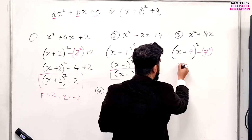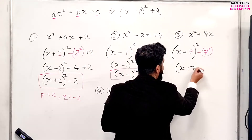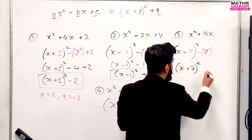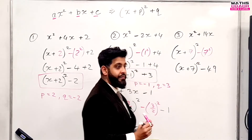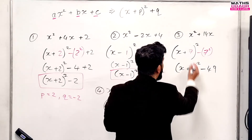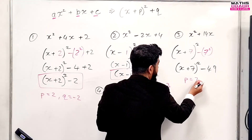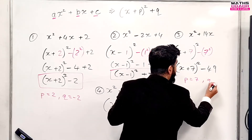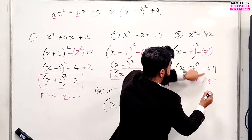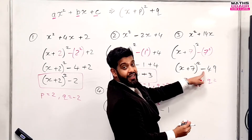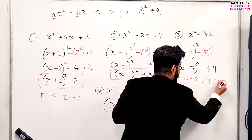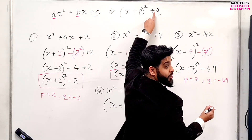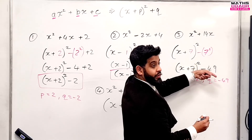For the third expression: we have X plus seven squared. Seven squared is 49, so minus 49. There's nothing else to add. So the result is X plus seven squared minus 49. Your value for P is seven — it's positive so no problem. Your value for Q is minus 49, because there's a minus sign there. Always look at the form and signs being used.